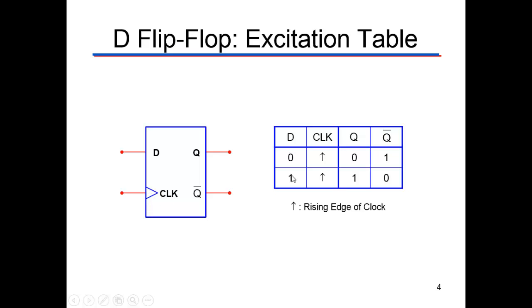So now let's look at the table here that explains what happens. When D is zero, this arrow means that when the edge of a clock comes by, it's going to look and see what D is and then make Q that. So when the rising edge of a clock comes by, it'll look at D. If D is zero, it'll make Q zero. If D is one, it will make Q one. So Q follows D.